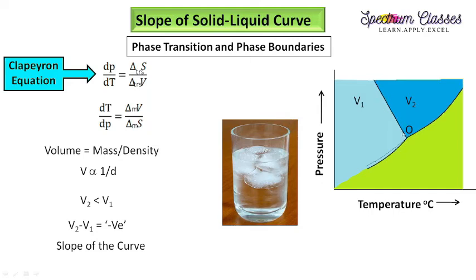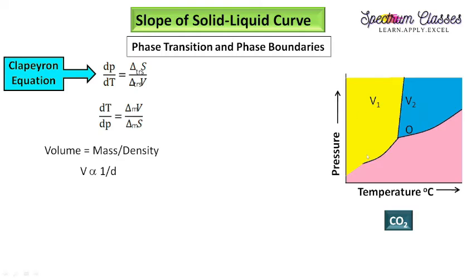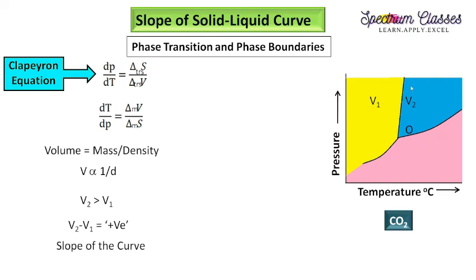For CO₂, in the solid-to-liquid transition, liquid CO₂ has more volume than solid CO₂. Therefore V₂ minus V₁ is positive, and the slope of the solid-liquid curve is positive — you can see it goes in the positive direction toward the right. You should be very careful about the slope of the solid-liquid phase transition curve.